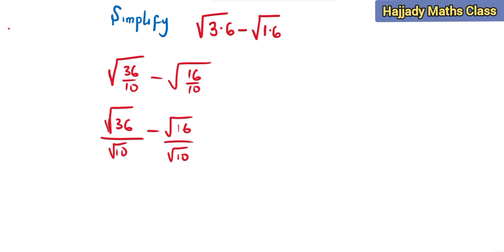And the square root of 36 is the same thing as 6 over root 10. Don't forget that 10 is not a perfect square so you cannot easily find the square root. While also the square root of 16 is 4 over root 10.